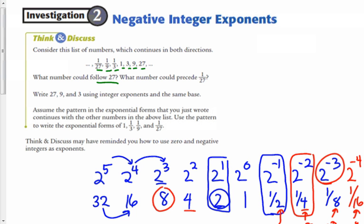So the next number after this would be 81. And then what number would precede 1 twenty-seventh? Well, notice that the denominators here are multiplying by 3 as I go this way. So the numerator is always 1. I could just take 27 times 3, which we just found out is 81, and put that there.